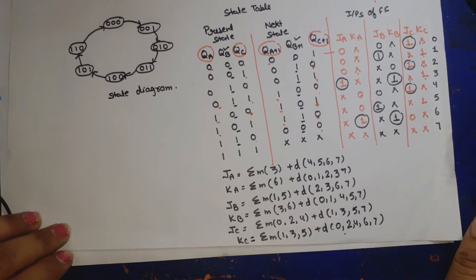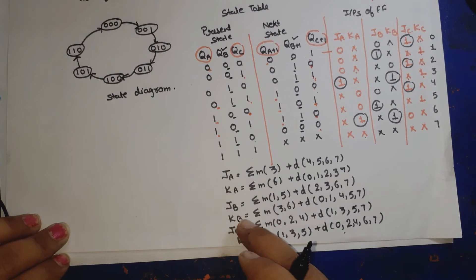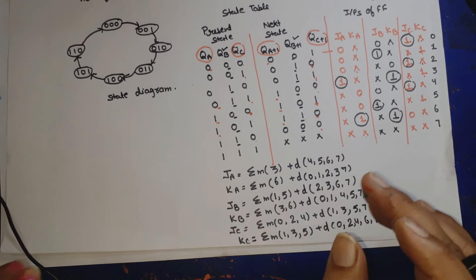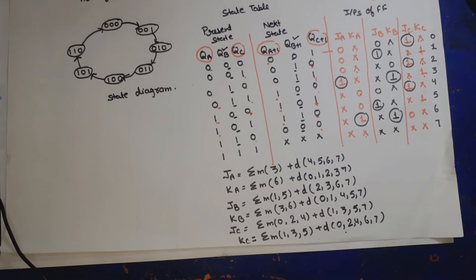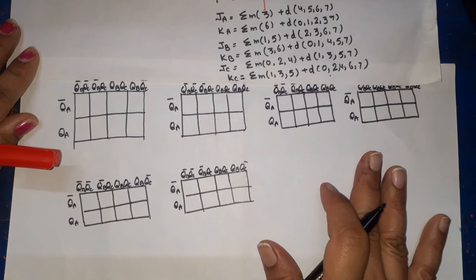Now we will make 6 K-maps — one for each of JA, KA, JB, KB, JC, and KC. I have drawn the 6 K-maps and now we put the values in.